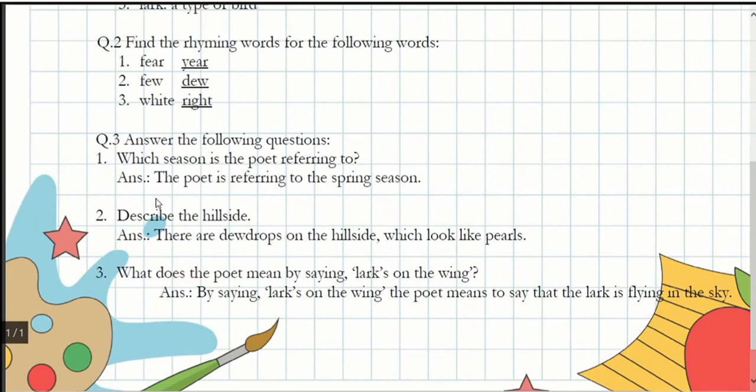Next, we'll move on to the question answers. Which season is the poet referring to? Referring means kis season ke taraf ishaara kar rahe hai. The answer will be: the poet is referring to the spring season.